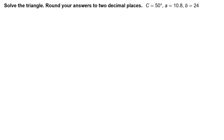Solve the triangle. Round your answers to two decimal places. The measure of angle C equals 50 degrees, the length of side a equals 10 and 8 tenths, and the length of side b equals 24.